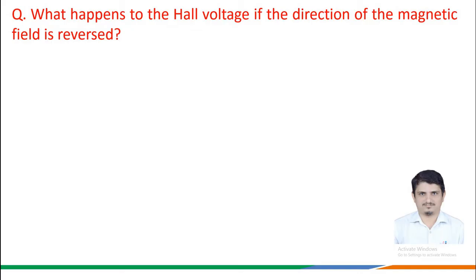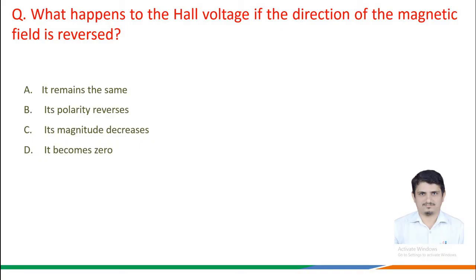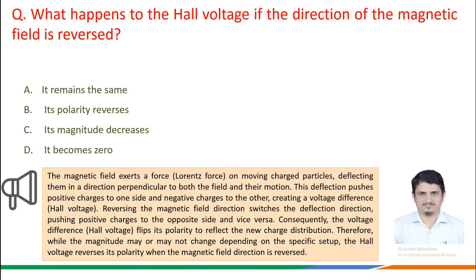What happens to the Hall voltage if the direction of the magnetic field is reversed? The magnetic field exerts a Lorentz force on moving charge particles, deflecting them perpendicular to both the field and the motion. This pushes positive charges to one side and negative charges to the other, creating a Hall voltage. Reversing the magnetic field direction switches the deflection direction, causing the Hall voltage to flip its polarity to reflect the new charge distribution.